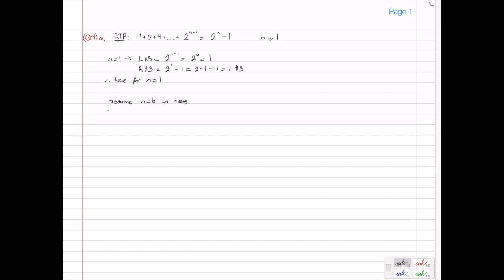That means we're assuming the following. 1 plus 2 plus 4 all the way up to and including 2 to the power k minus 1 is equal to 2 to the k minus 1. Okay, now here I should also say that when I'm talking about k, k is actually something that's greater than or equal to 1. Obviously, k has to be part of the allowable values of n. Okay, so k has to be greater than or equal to 1.